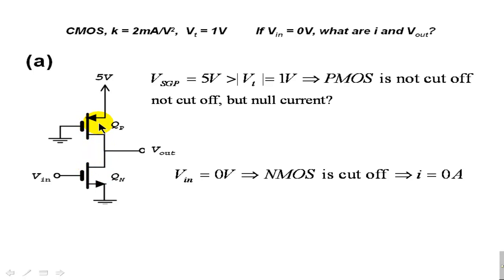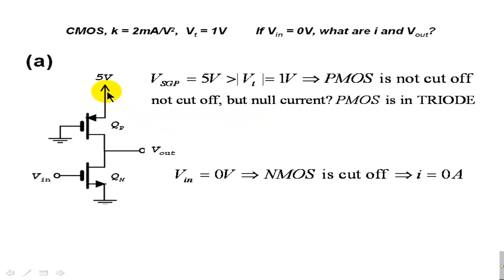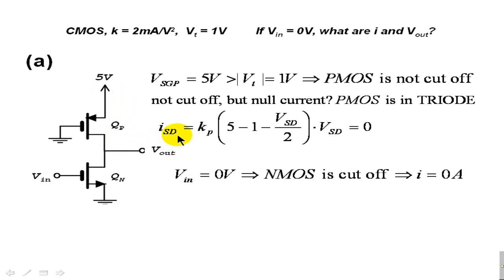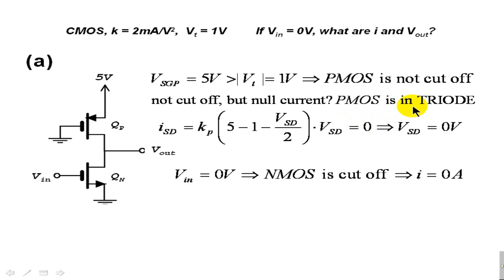What is the mode of operation of the P transistor? It has to be in triode — that is the only possible conclusion. It is not cut off, but the current is 0, so it is in triode mode. We know the current and the formula to compute that current, which depends on the voltage between the source and drain. We use that formula to determine the source-drain voltage, and with that we determine the output voltage. We solve that and find the only possibility for that triode transistor to have a null current is for VSD to be 0.